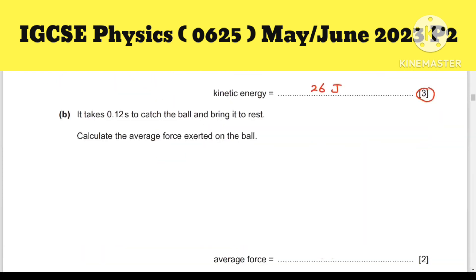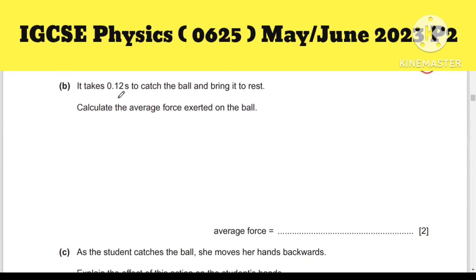Question 2b: It takes 0.12 seconds to catch the ball and bring it to rest. Calculate the average force exerted on the ball. When you have to calculate average force, Newton's second law comes to mind: F = ma. Mass is 0.16. For acceleration, we know that acceleration equals final velocity minus initial velocity divided by time.